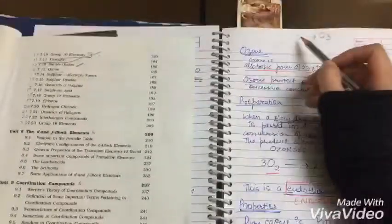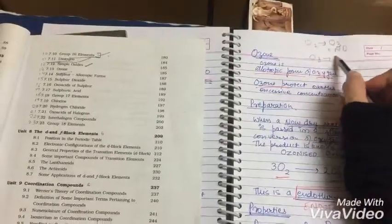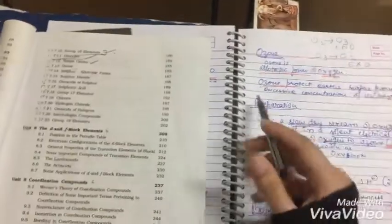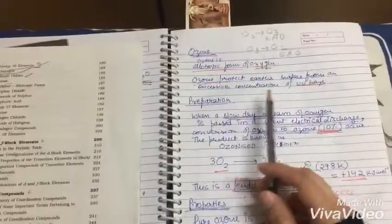Ozone: when we convert O2 to O3, it is an endothermic process, and when we convert O3 to O2, it is an exothermic process. Then ozone is an allotropic form of oxygen. It protects from UV rays.